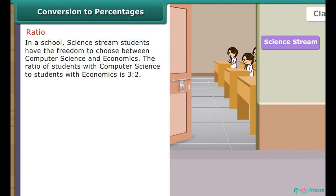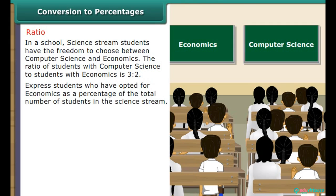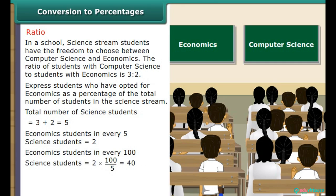In a school science stream, students can choose between computer science and economics. The ratio of computer science students to economics students is 3 is to 2. Express students who opted for economics as a percentage of total science students. Total science students equals 3 plus 2, equals 5. Economics students in every 100 science students equals 2 upon 5 into 100, which equals 40. Therefore, 40% of the science students have opted for economics.